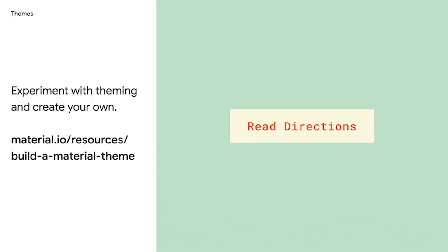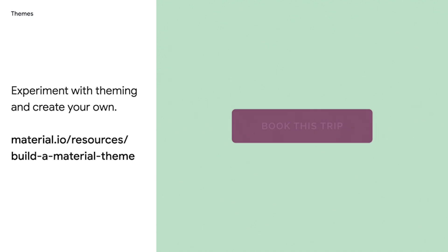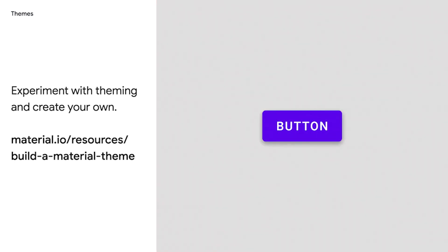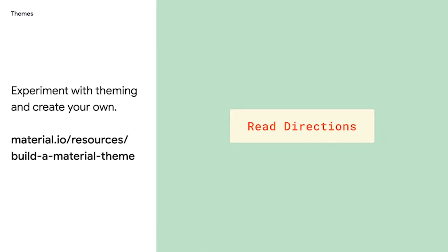We can see how type is applied to material components. Type is one of the subsystems that allows you to create themes for your material components, customizing them to create something unique. For example, the text on a button should be shared by all the buttons in a dialog box and tab labels. Let's create and apply a custom type scale to a data table.